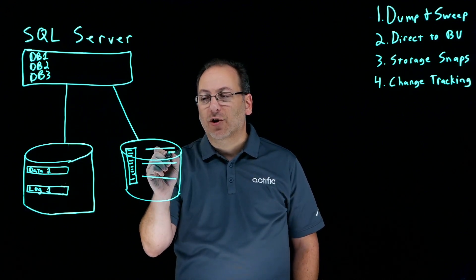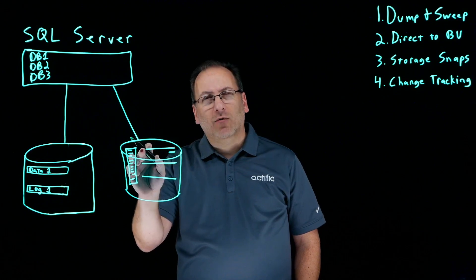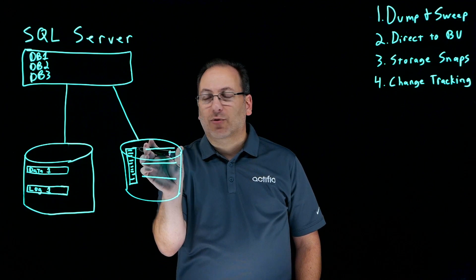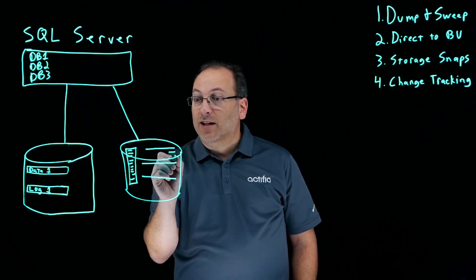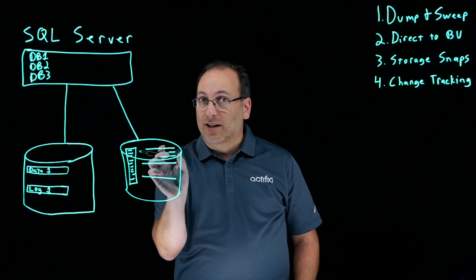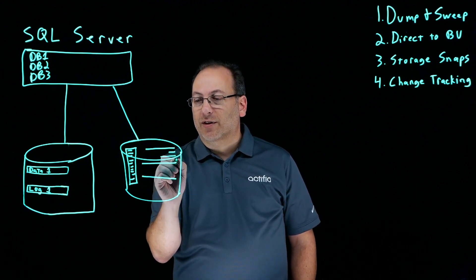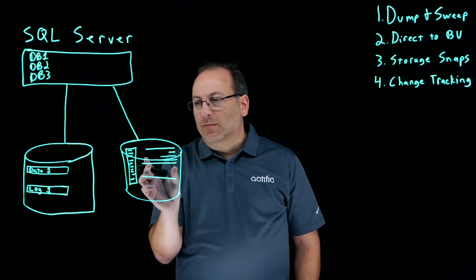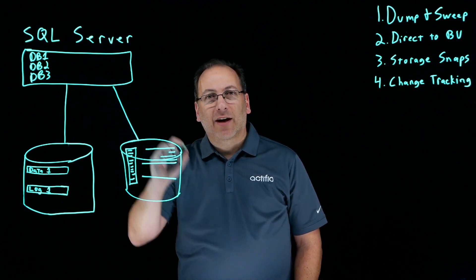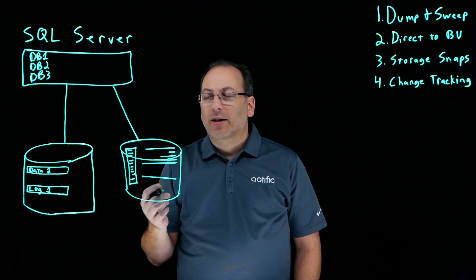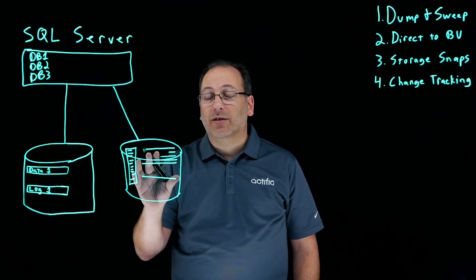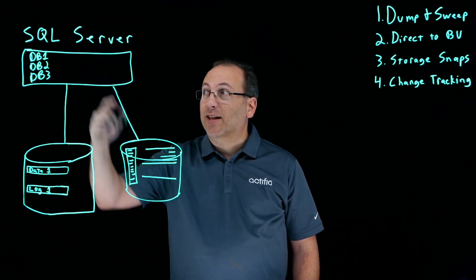They may even set up differentials, where on day number one you run a full, on day number two you have a diff — and a differential means just the changes since the previous full. The challenge with diffs is on day number three it's still the changes since the previous full, not since the previous diff. Therefore, it grows every time you do it; eventually it becomes not worthwhile and you just run another full. You have some retention on this disk, usually relatively short, and the DBA has the ability to access this disk from multiple places throughout the environment so that they can do their own restores copying that data back.